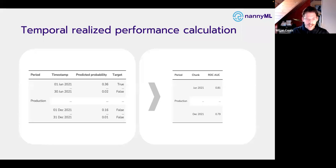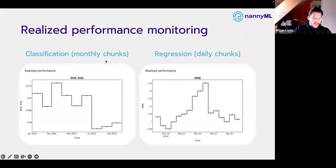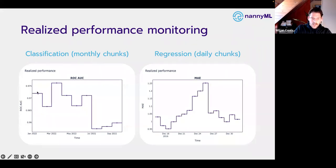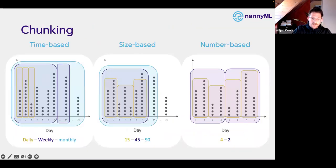This part is called chunking, and how we chunk has a lot of implications. We can chunk by month or by day — we use a step plot for this because the step for a given month represents the aggregated performance for that entire month. There are three chunking approaches: time-based chunking (grouping by day, week, or month), size-based chunking (e.g., every thousand API calls form one chunk), and number-based chunking (simply specifying how many chunks you want — four, five, or ten).